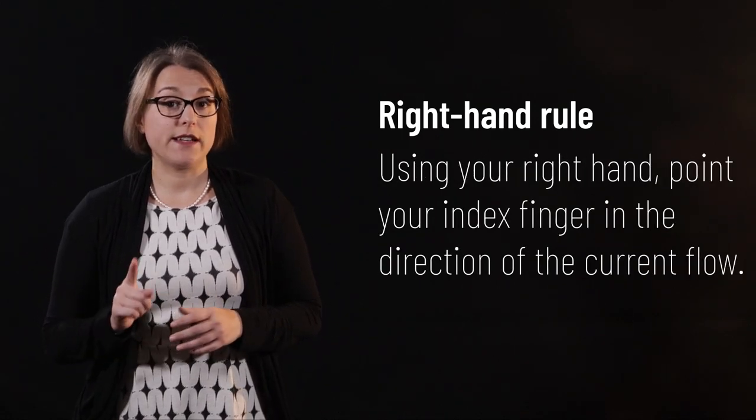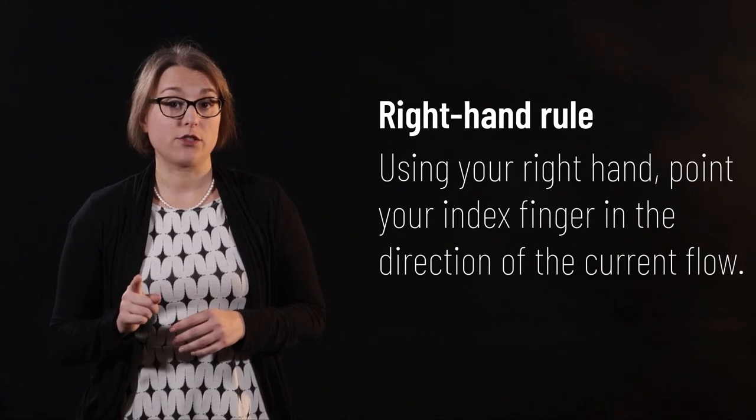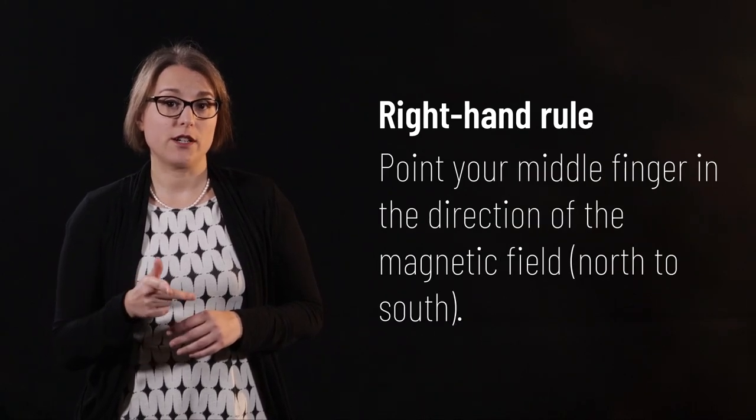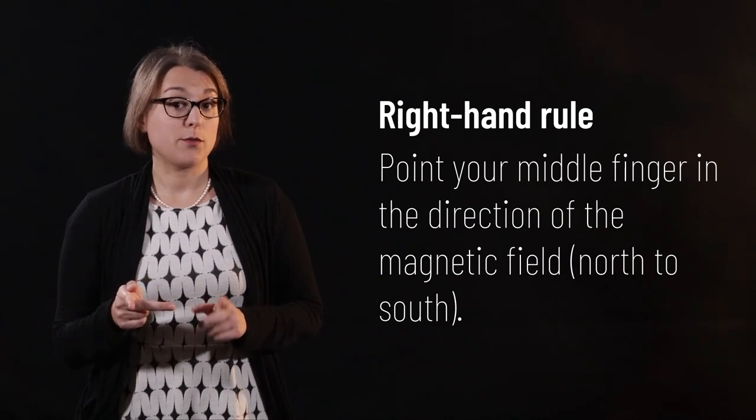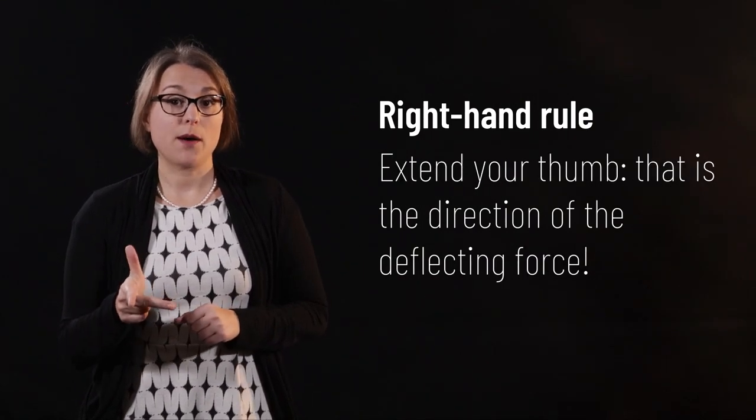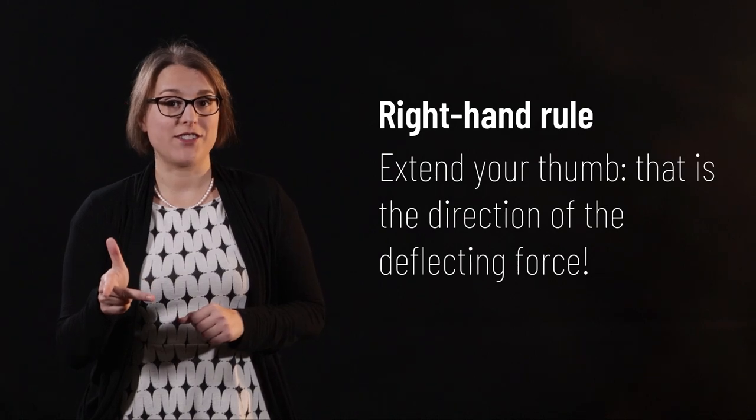First, we use our index finger to point in the direction of the electric current. Our middle finger will point in the direction of the magnetic field. Remember, it flows from north to south. Point your thumb, and that shows the direction of the deflecting force.